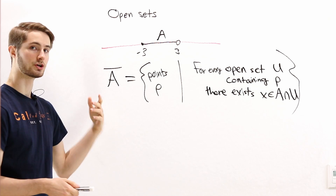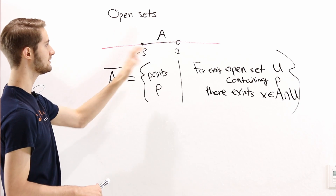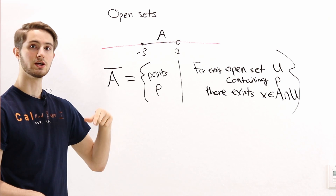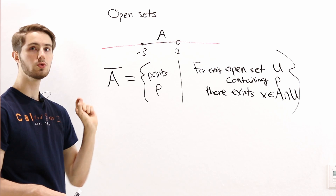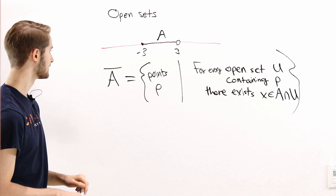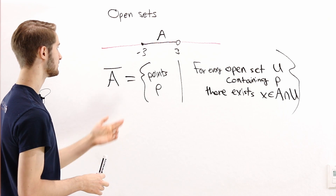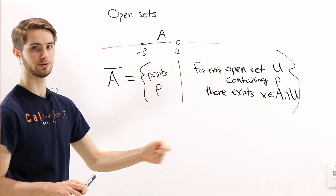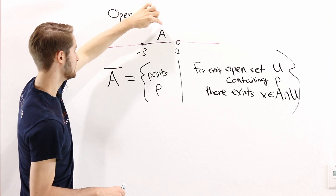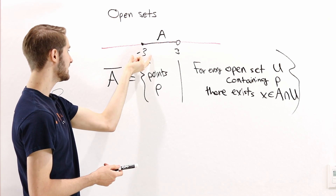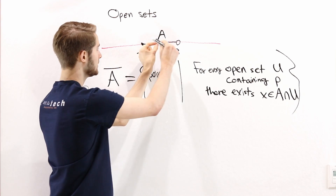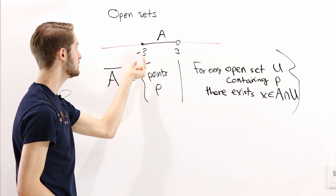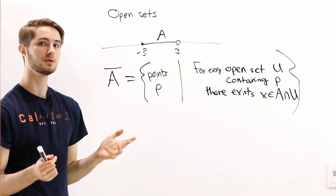Now we know how to find the closure of a set A, meaning we can include all of the boundary points. But what if instead of including the boundary points, we want only the boundary points? The closure tells us which points are in A or in the boundary of A, but it doesn't tell us which points are only in the boundary of A. For this set A, the boundary is the points negative three and positive three — the points on the very edge — and we want just those, not the interior points.